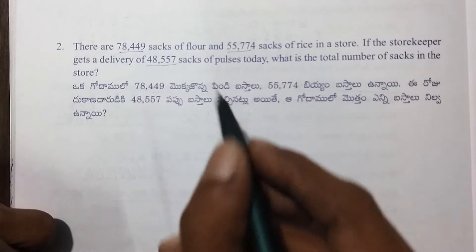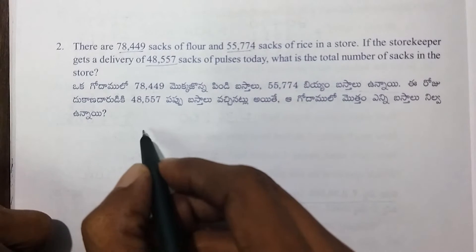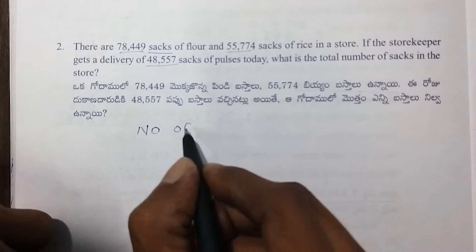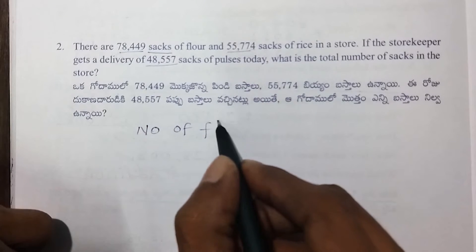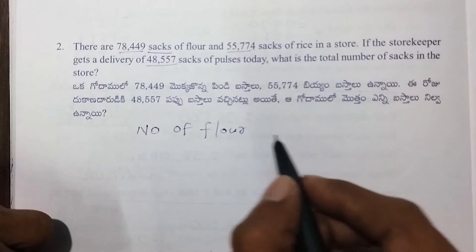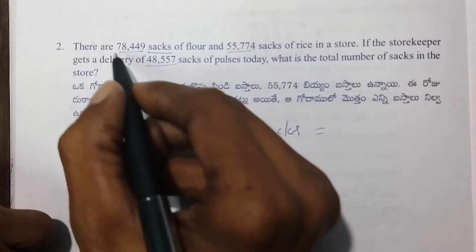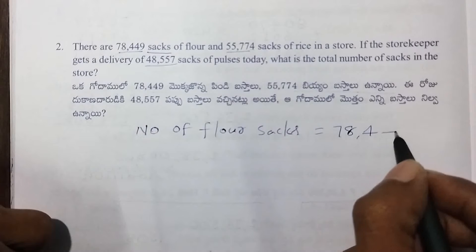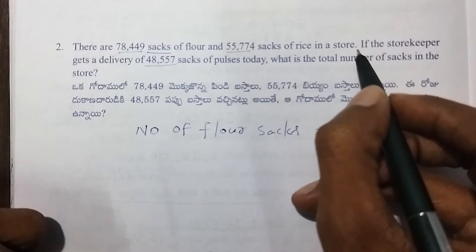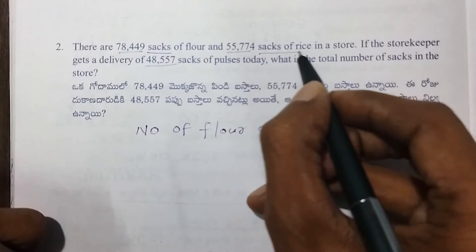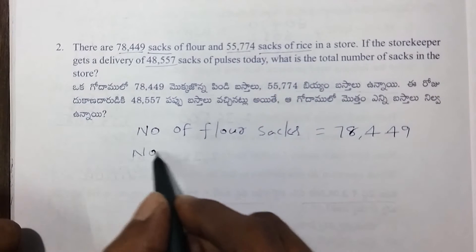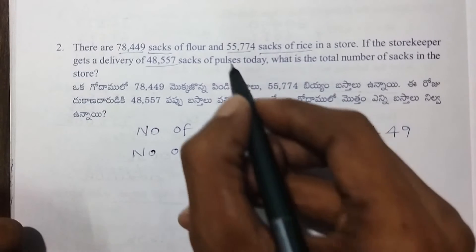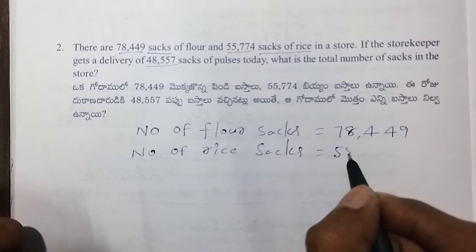First, number of flour sacks: 78,449 sacks. Next, number of rice bags.